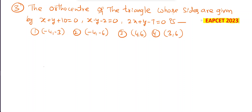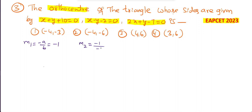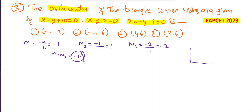Third question from TS MSet 2023: find the orthocenter of the triangle whose sides are x + y + 10 = 0, x - y - 2 = 0, and 2x + y - 7 = 0. The slope of the first line m1 = -1, slope of the second line m2 = 1, slope of the third line m3 = -2. Since m1 × m2 = -1, lines 1 and 2 are perpendicular.